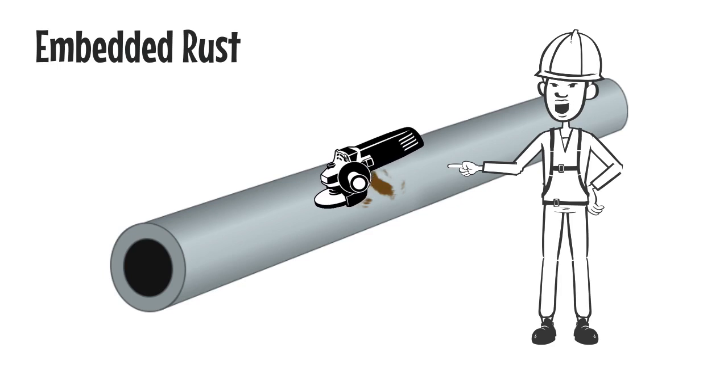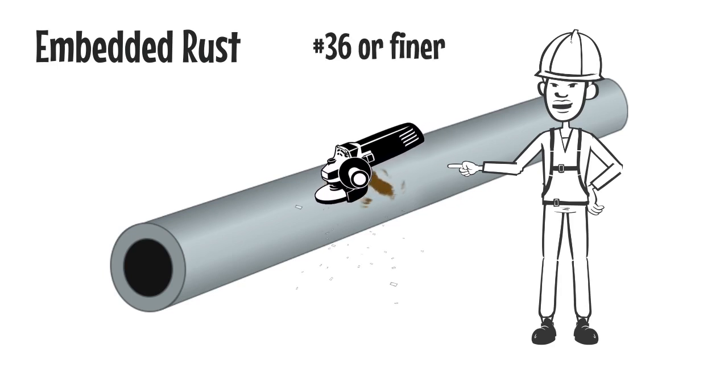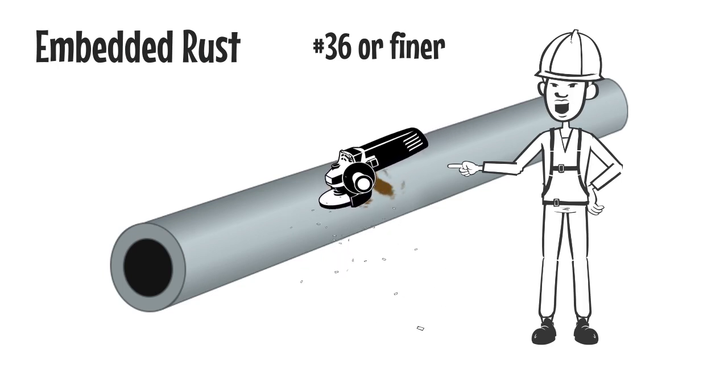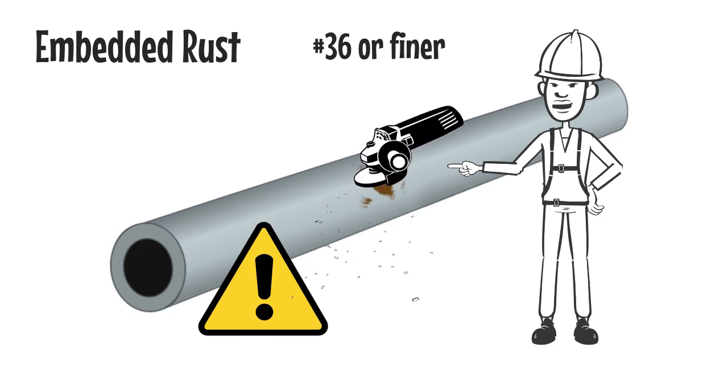We recommend the removal of embedded contamination be done with a number 36 or finer flapper wheel that does not contain iron or iron oxides. The ground area should blend with the material without edges or contours and the operator must use caution to prevent excess material removal and heat buildup.